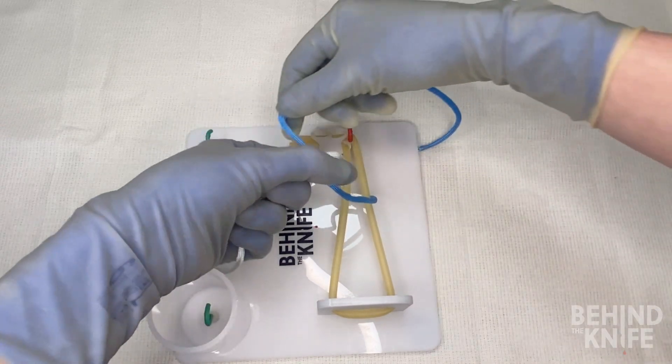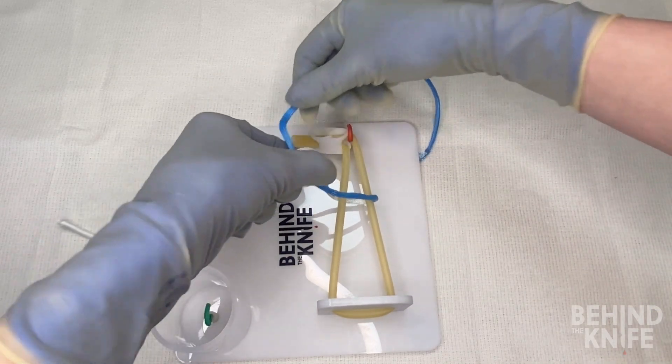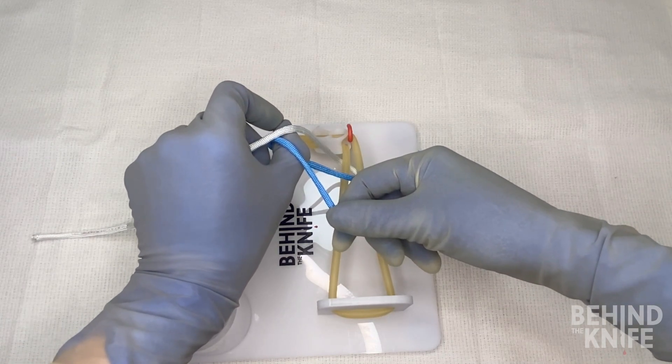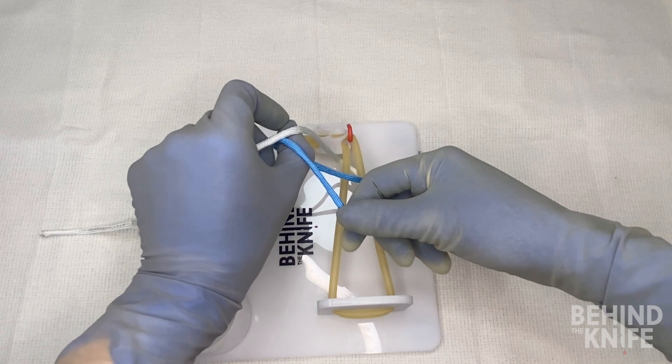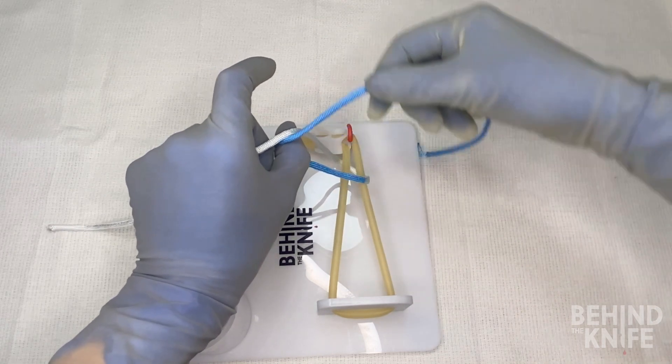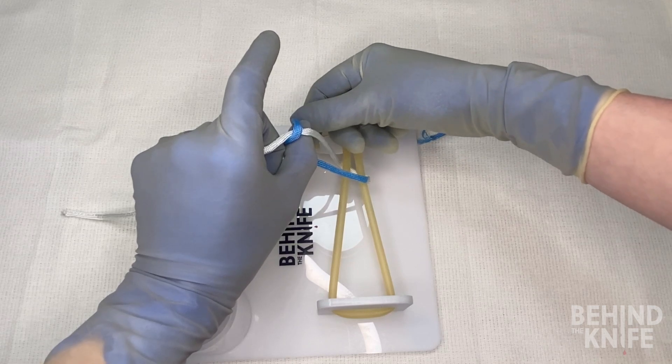Once again, we'll rotate our hands through with our index finger on top and our thumb on the bottom. We can unpinch our index finger and our thumb, and we can use our right hand to drape the blue end of our string over top our thumb.